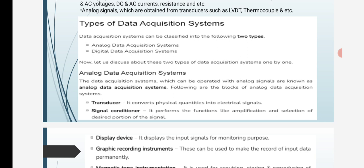The analog data systems which can be operated with analog signals are known as analog data acquisition systems. Following are the blocks of analog data acquisition systems: